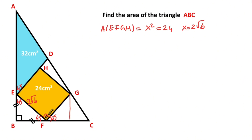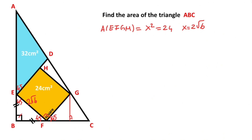Next step: if you draw a perpendicular line like this, notice that this triangle and this triangle are congruent. Why? Notice that the two triangles have the same angles, and the side opposite the 90 degrees are equal. Therefore, if the hypotenuse is 2 root 6, the side opposite the 45 degrees must be equal to root 3.